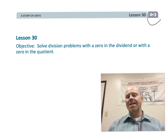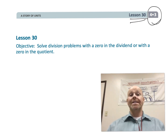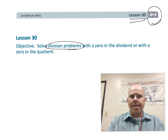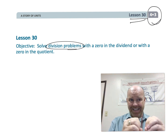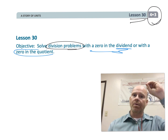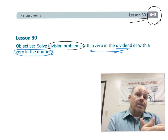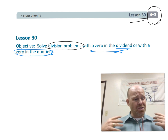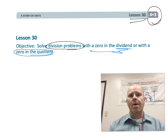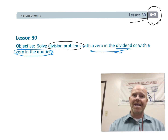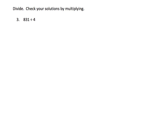This is fourth grade module 3 lesson 30. In this lesson, students are going to continue practicing the standard algorithm of dividing, but we're going to add a layer of complexity in that we're going to have a zero in the dividend — a zero showing up inside the house — and also occasional problems where zero shows up in the quotient, where a number won't go into something and we have to put in a zero.